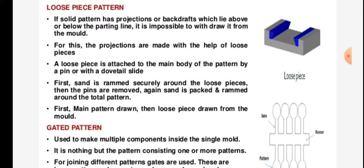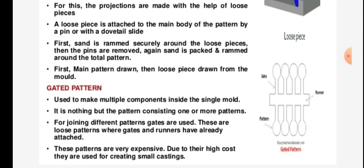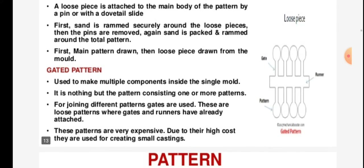A loose piece is attached to the main body of the pattern by a pin or with a dowel. First, sand is rammed securely around the loose pieces, then the pins are removed. Again, sand is packed and rammed around the total pattern. First the main pattern is drawn, then the loose piece is drawn from the mould.